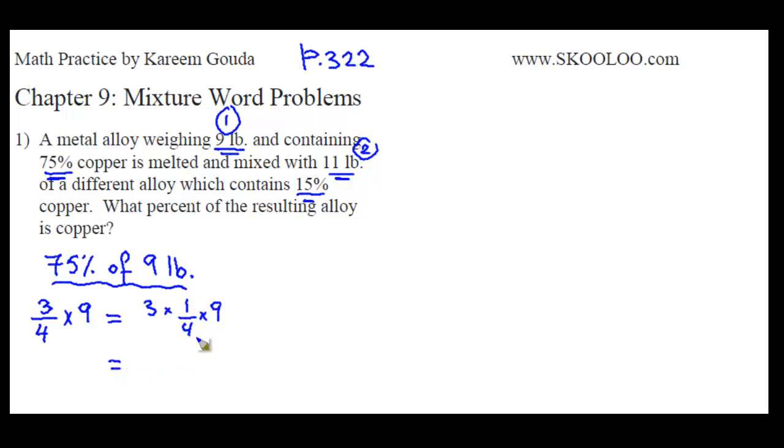A quarter of 9, the quarter of 8 is 2 and 8 plus 1 is 9. So what's a quarter of 1? 0.25. So a quarter of 9 is 2 and a quarter, 2.25. Now check: 4 times 2 is 8, 4 times 0.25 is 1, 8 plus 1 is 9, so that's right. Times 3, because here there's 3. So 3 times 2 and a quarter, which is 6.75. So the first alloy has 6.75 pounds of copper. Cu is the symbol for copper.